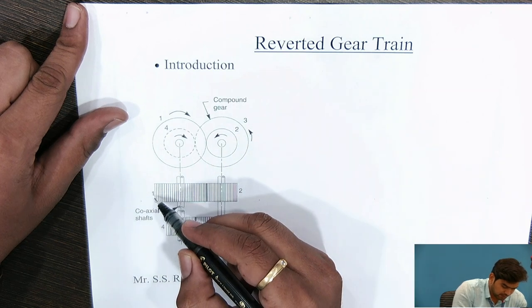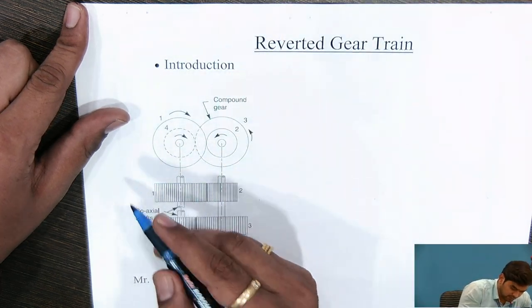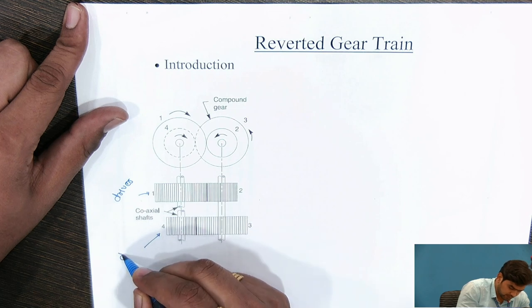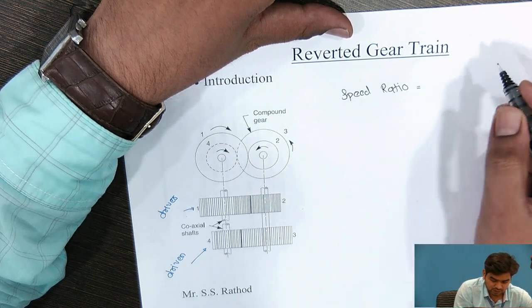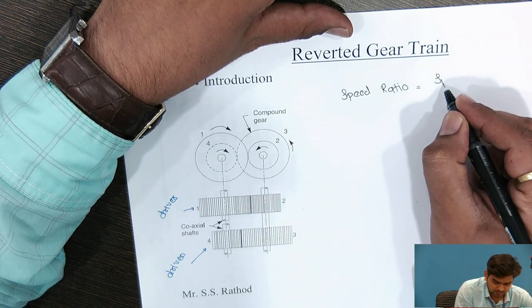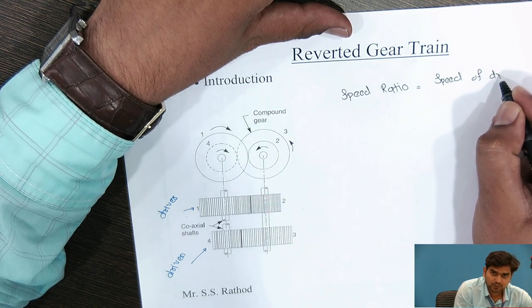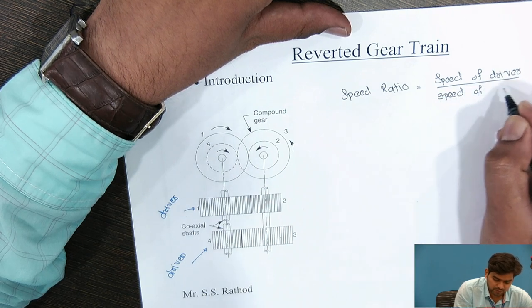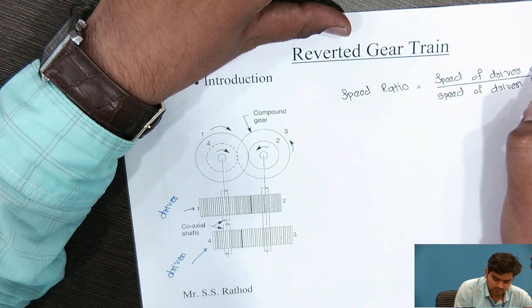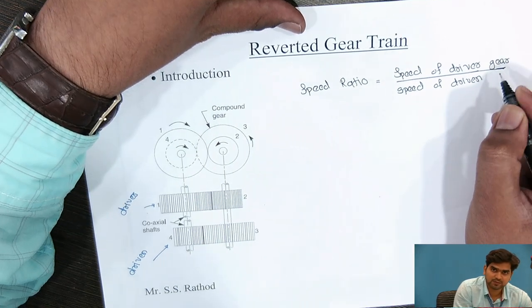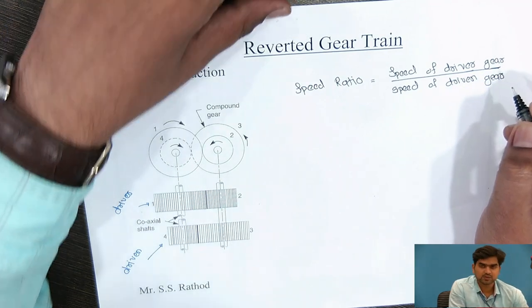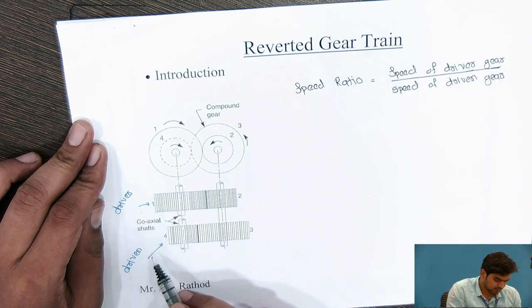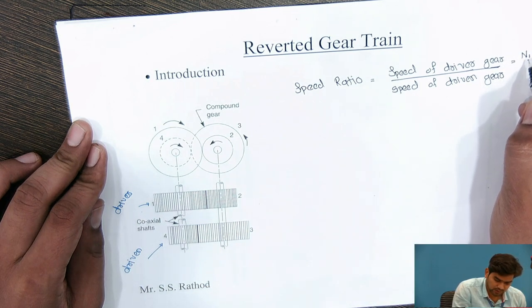In this gear arrangement, gear number 1 is the driver and gear number 4 is the driven gear. Speed ratio is the ratio of the speed of the driver divided by the speed of the driven gear — that is N1 divided by N4.